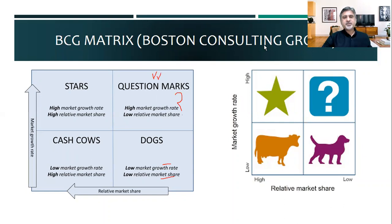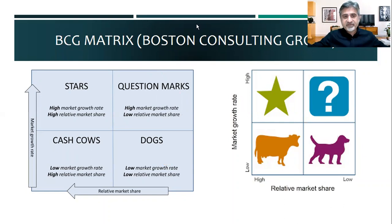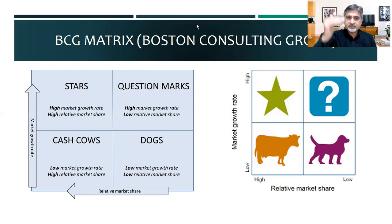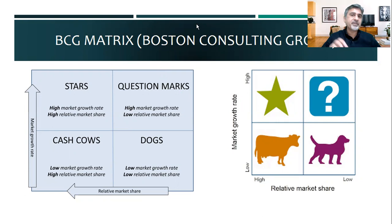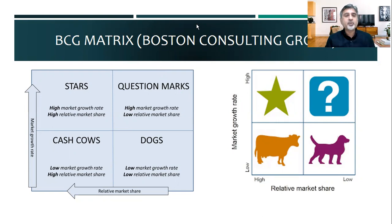So what you do is take all your products — maybe 10, maybe 20 — and put them into different blocks: which are my star products, what are my question marks, which are my dogs, which are my cash cows? Based on that, you decide how to allocate resources and what they can bring to you.